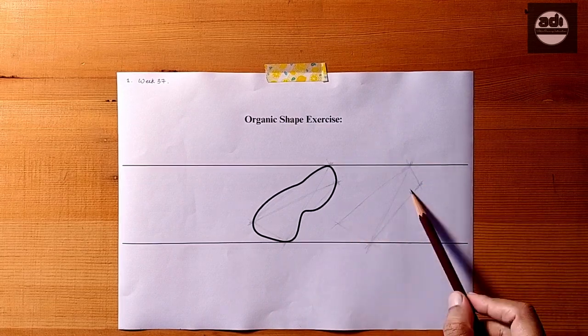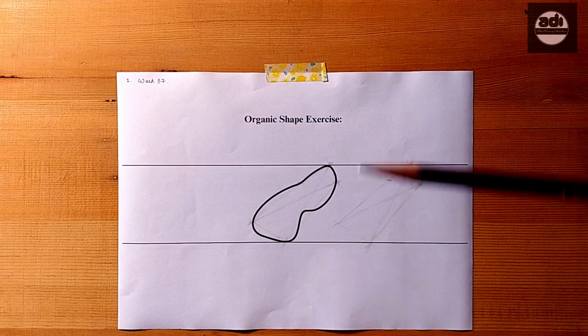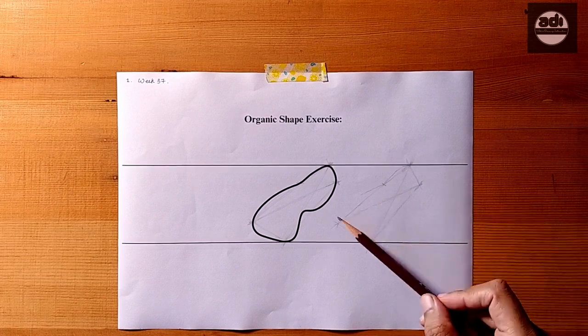The next thing to do is to find the width of the shape. We do this by finding the widest point on either side of the major axis line. We then draw that point using triangulation.